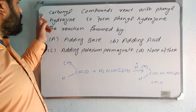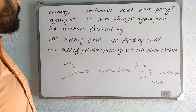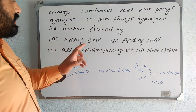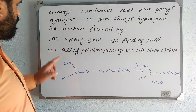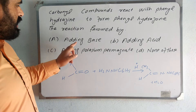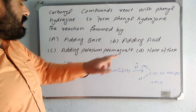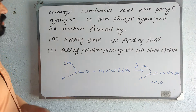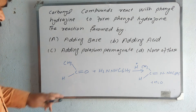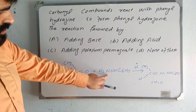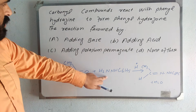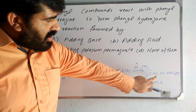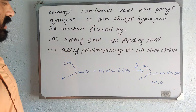Our first MCQ is number 31. Carbonyl compounds react with phenyl hydrazine to form a phenyl hydrazone. The reaction is favored by: option A, adding base; option B, adding acid; option C, adding potassium permanganate; option D, none of these. Carbonyl compounds react with phenyl hydrazine in the presence of acid to form a phenyl hydrazone plus water.